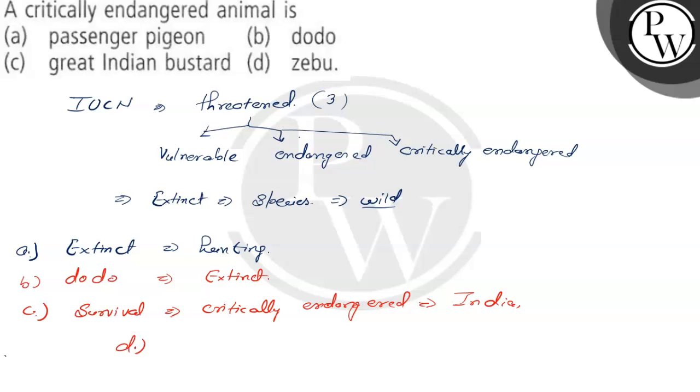The last option is Zebu. Zebu is not present in the IUCN list.